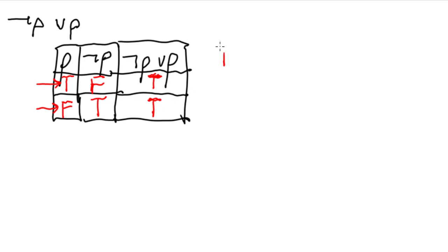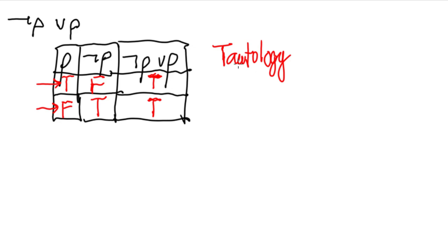We can see that 'not P or P' is always going to be true no matter what the value of P is. This is what we call a tautology — when the truth table gives all true values in every possible case.